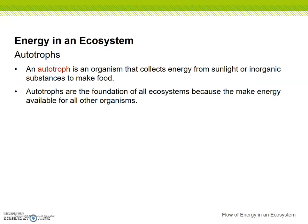First we're going to look at what are called autotrophs. An autotroph is an organism that collects energy from sunlight or inorganic substances to make food — meaning it doesn't eat, it doesn't consume something else. It absorbs sunlight and uses that energy to create its own energy. Autotrophs are the foundation of all ecosystems because they make energy available for all other organisms. If we did not have plants, our planet would fall apart, because we wouldn't have the initial source of energy.